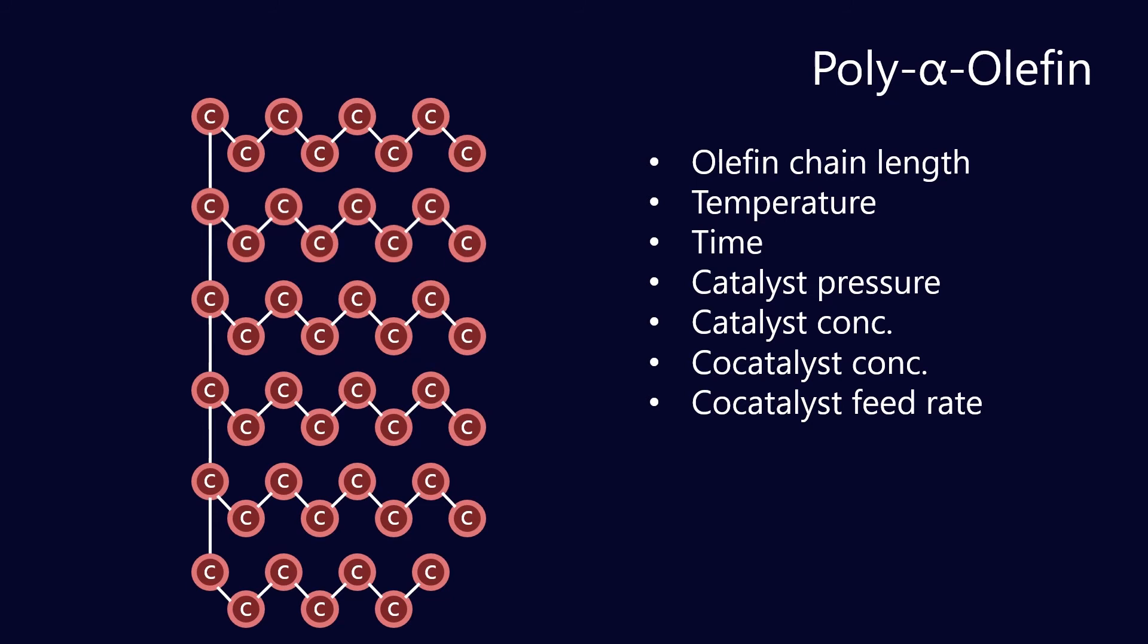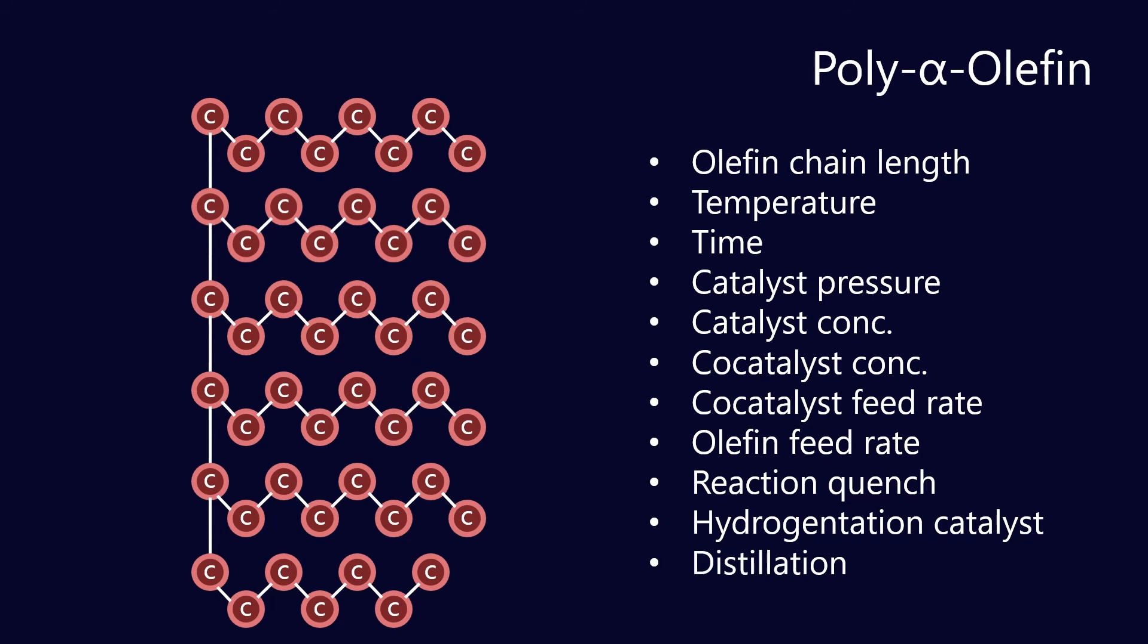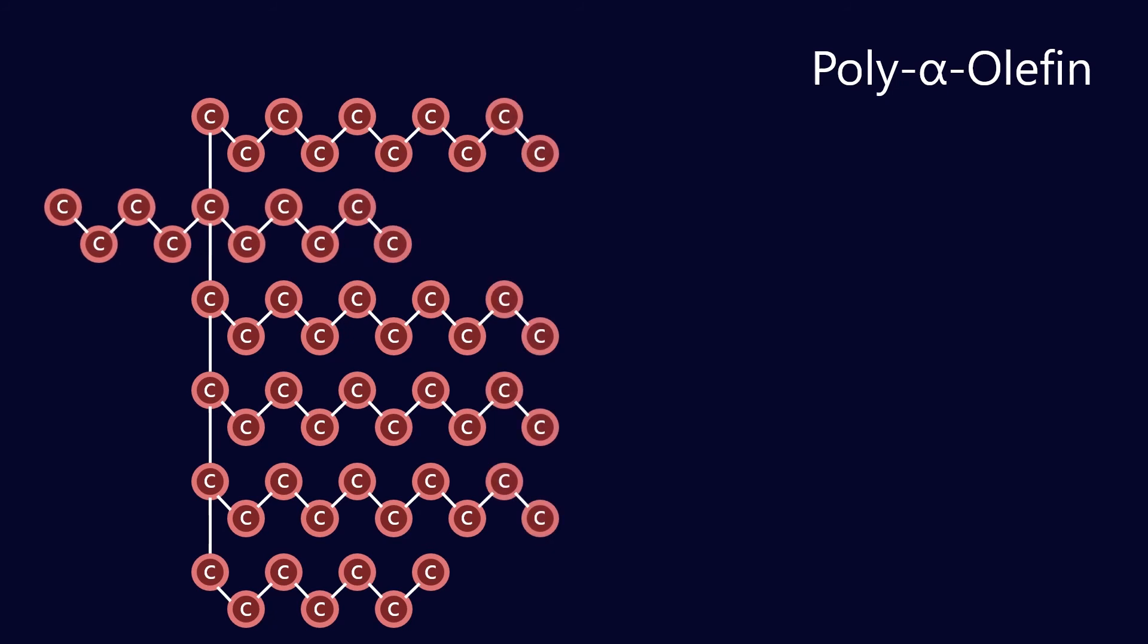The co-catalyst concentration and co-catalyst feed rate - that co-catalyst is either going to be water and alcohol or maybe a carboxylic acid. The olefin feed rate is going to have an effect on the final product. The reaction quench - after you've run that catalytic reaction it's often quenched with water to stop the reaction. The hydrogenation also occurs under a catalyst. And then finally distillation - after the reaction quenching with water you need to get rid of all that water that might be in the system as well as some of the catalysts. You might have some BF3, some of that boron trifluoride in the product. You obviously want to distill that out so that you're left with a pure PAO at the end.